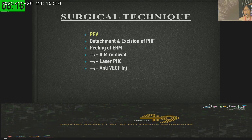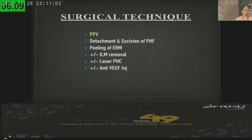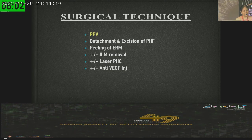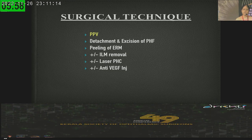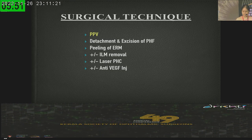Surgically, it is basically a core vitrectomy — you don't have to shave the vitreous base. You detach the posterior hyaloid, peel the epiretinal membrane, peel the internal limiting membrane, do laser, and give anti-VEGF at the end of the procedure. So you are combining the good effects of all treatment modalities to give maximum benefit to your patient.